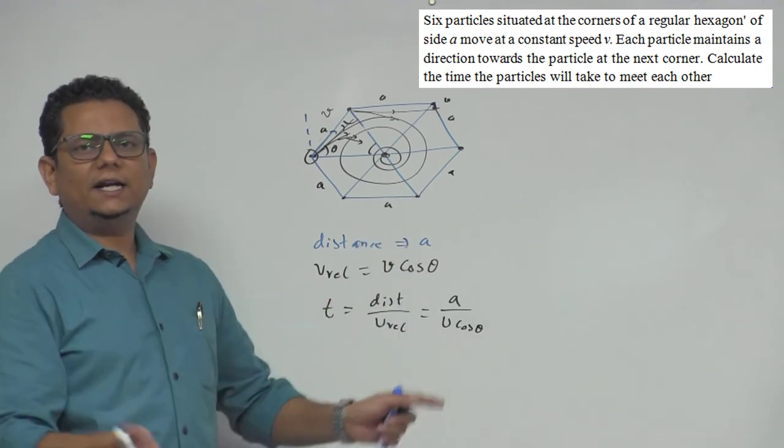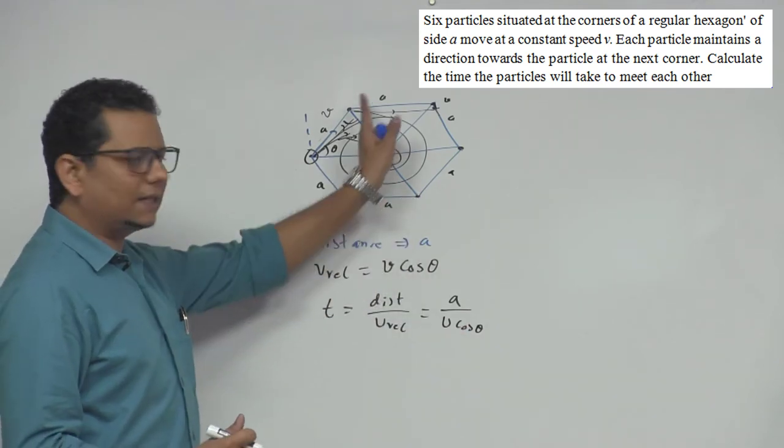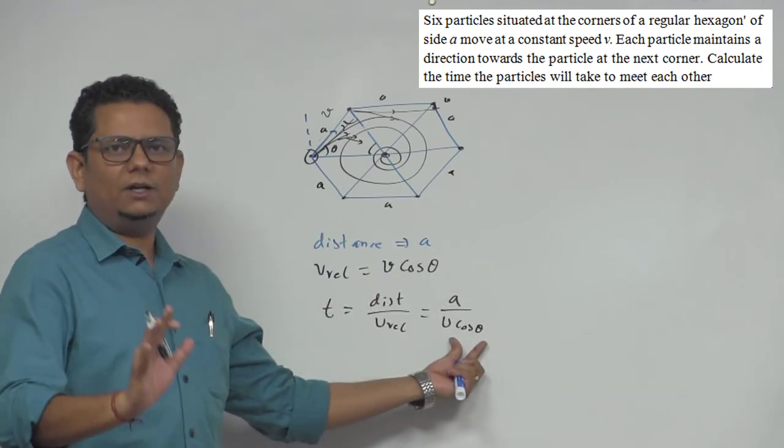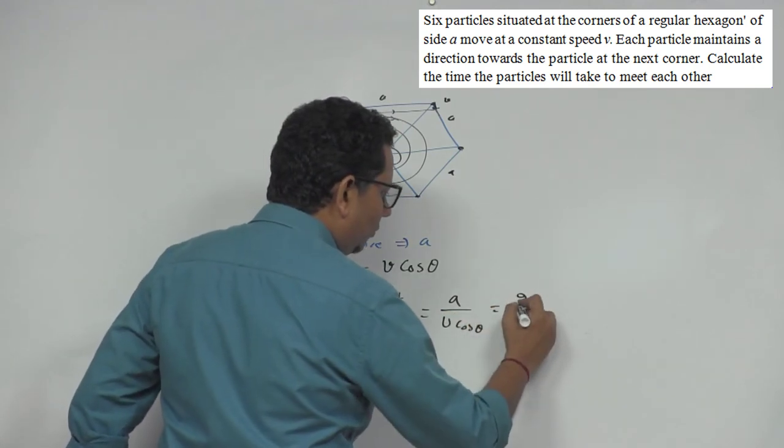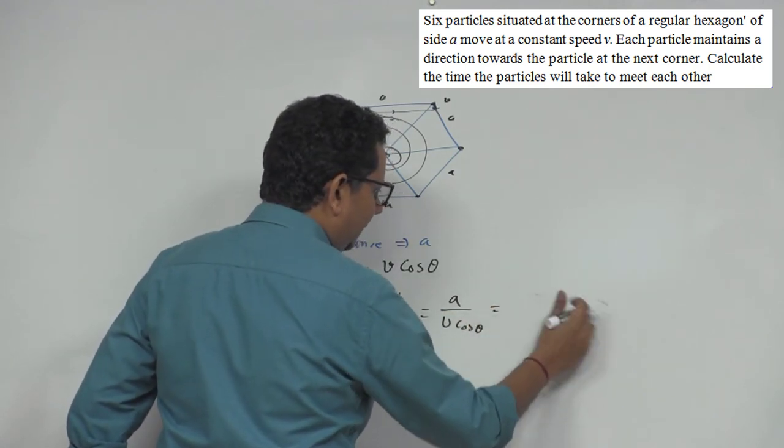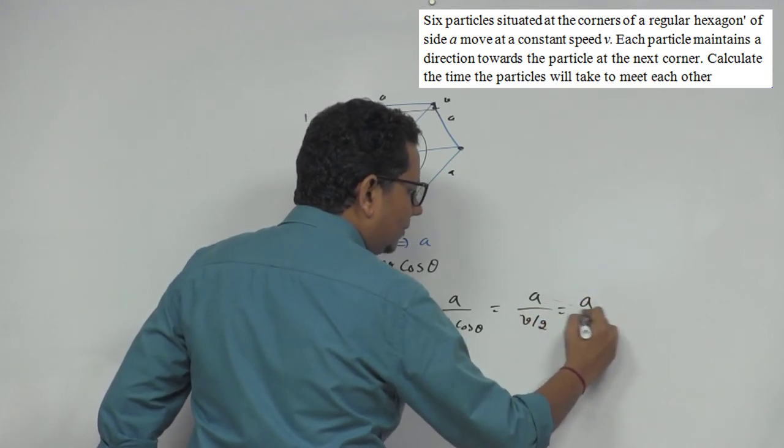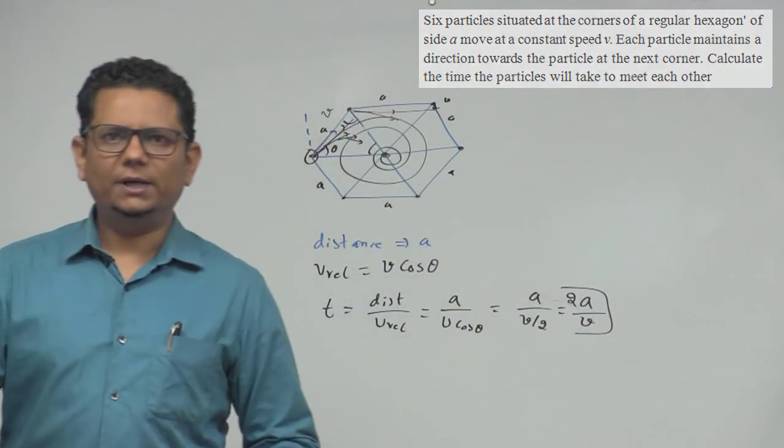Time taken will be equal to a divided by 2a by V. So that will be our final answer.